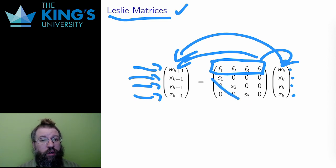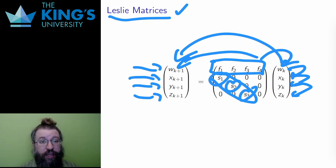The Si, on the other hand, are the transition from one age category to the next. These are the survival rates. S1 is the rate of survival from 1 to 2, S2 from 2 to 3, and S3 from category 3 to category 4.